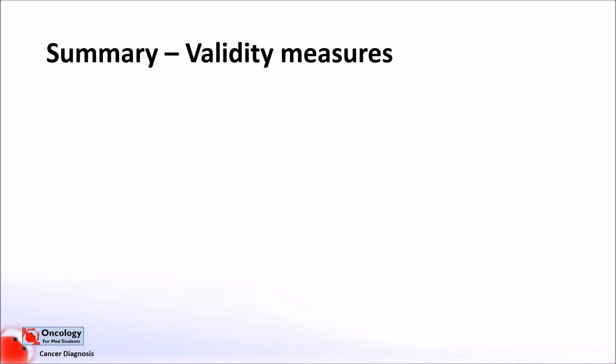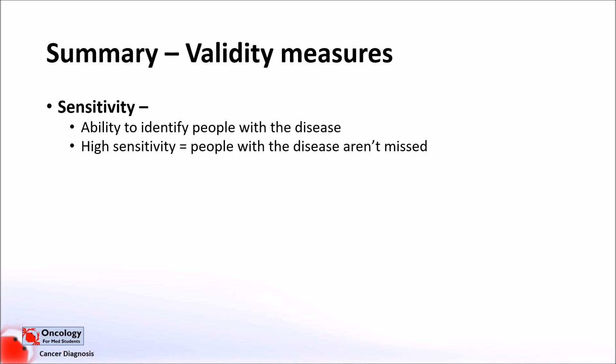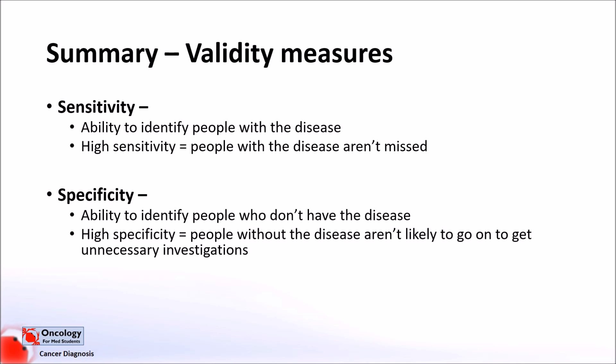We'll talk about how we do this in later videos. Sensitivity is the probability that a test will correctly identify people who have the disease with a positive result — a test with high sensitivity will ensure people with the disease aren't missed. Specificity, on the other hand, is the probability that a test will correctly identify people who don't have the disease with a negative result — a test with high specificity will ensure we don't have many people without the disease going on to have unnecessary further testing. Ideally we'd love a test that is both 100% sensitive and specific, but unfortunately this is impossible. As we'll see in the next video, sensitivity and specificity are very closely linked, and in general as one increases, the other decreases — this is known as the sensitivity-specificity trade-off.